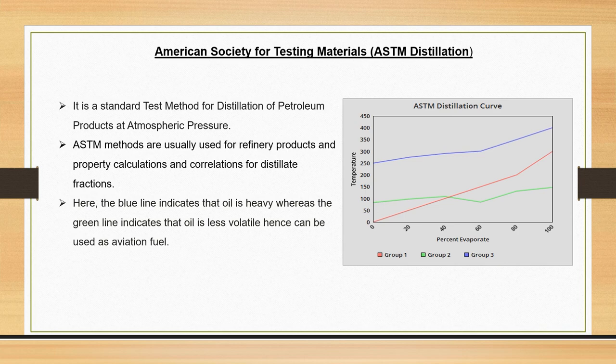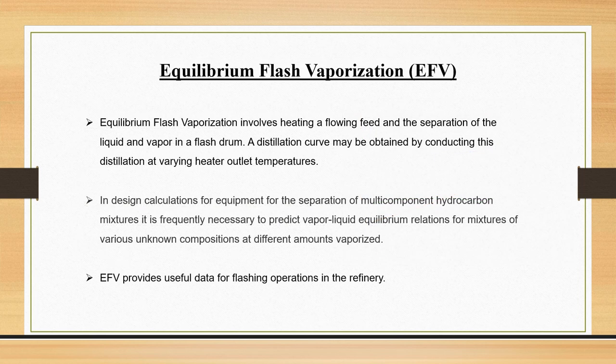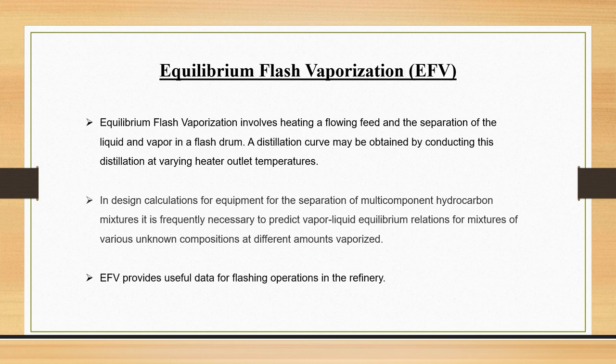Now the second method: Equilibrium Flash Vaporization, or EFV. It involves heating a flowing fluid feed and separation of liquid and vapor in a flash drum. We can plot a distillation curve based on conducting this distillation at various temperatures. The specific purpose of EFV is to calculate process design parameters for separation of multi-component hydrocarbon mixtures, and it is also used to predict vapor-liquid equilibrium relations for mixtures of various unknown compositions. EFV provides useful data for flashing operations in the refinery.